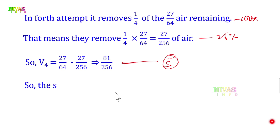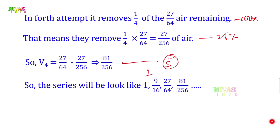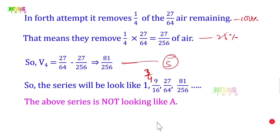Since we do not have a common difference — the differences between successive terms are not the same fixed number — the above series does not form an arithmetic progression. The common difference is different each time, so this is not an arithmetic progression.